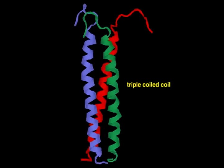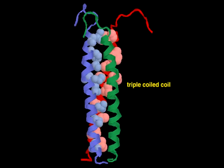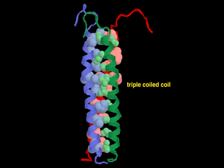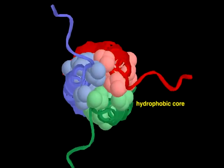A triple coiled coil is another stable structure formed by alpha helices. In this case, three amphipathic helices twist around a central axis. The hydrophobic sides of all three helices face the center of the coil, creating a stable hydrophobic core.